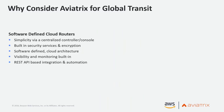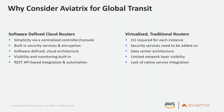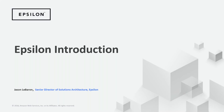In summary, Aviatrix brings simplicity to transit through our central controller. We have built-in security and encryption, network isolation by default rather than lateral movement. It's software-defined, with visibility, monitoring, and logging out-of-box, plus REST API for automation. Compared to traditional vendor solutions, it will give you a very different experience. Now let me introduce Jason LeBaron.